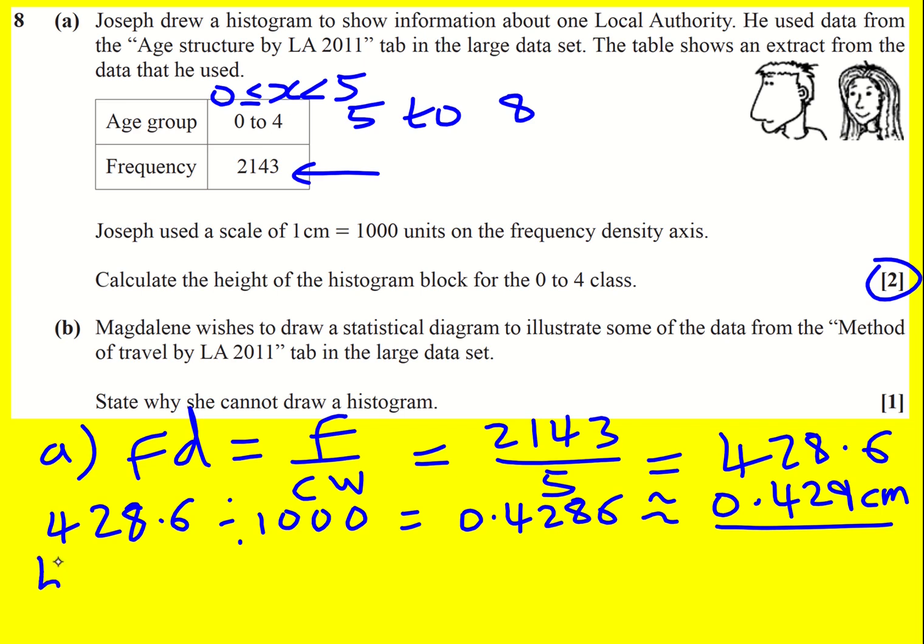For part B, why can't we draw a histogram for data that's on method of travel? Well even if you've never seen it, and that's what I'm assuming in this question,